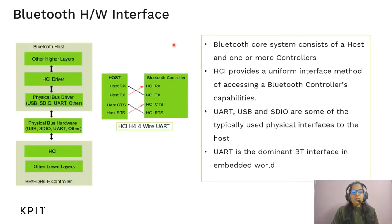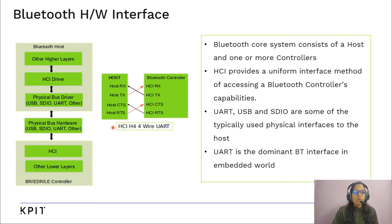Let us start with the Bluetooth hardware interface architecture. The Bluetooth core system consists of a host and one or more controllers. The HCI driver on the host exchanges data and commands with the HCI firmware on the BT hardware. The Bluetooth controller typically uses UART, USB, and SDIO as physical interfaces to the host. UART is the most dominant BT interface in the embedded world — specifically HCI H4, a 4-wire UART with data flow control, using RX, TX, CTS, and RTS signals.